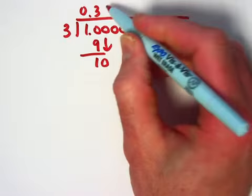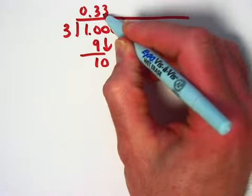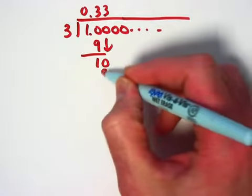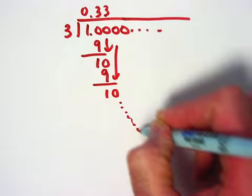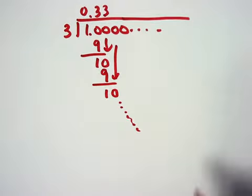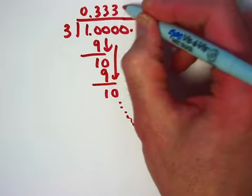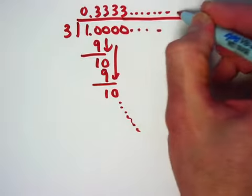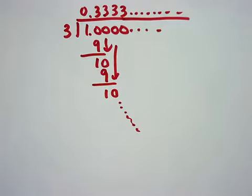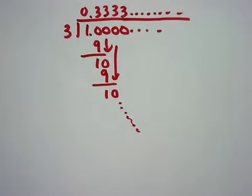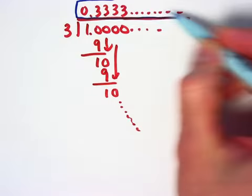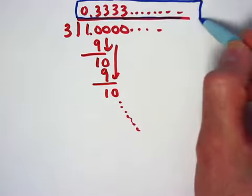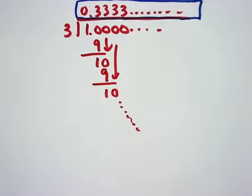Three goes into ten three times, put the three up there. Three times three is nine. Ten minus nine is one. Bring down that zero. You can see the pattern is going to go on forever and ever. So that means that the threes are going to go on forever and ever and ultimately means one-third has a decimal representation of 0.3 repeating. The threes go on forever and ever.